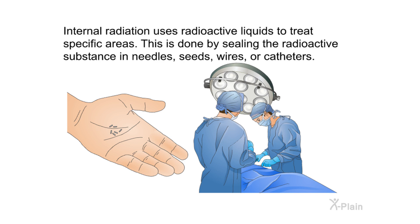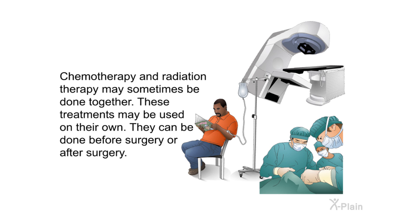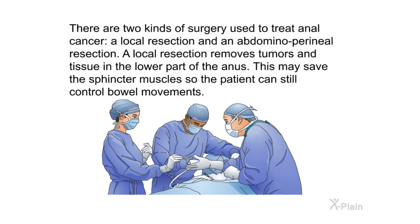Internal radiation uses radioactive liquids to treat specific areas, delivered by sealing the radioactive substance in needles, seeds, wires, or catheters. Chemotherapy is the use of drugs to kill cancer cells, taken by mouth or injected into a vein or muscle, allowing the drugs to reach cancer cells throughout the body. Chemotherapy and radiation therapy may sometimes be done together, and these treatments can be used before or after surgery.